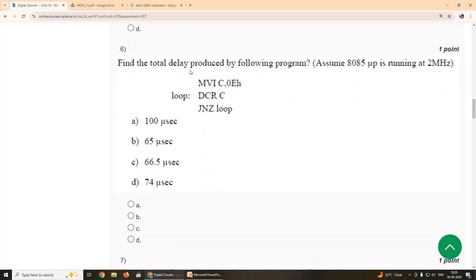Sixth question: Find the total delay produced by the following program. Assume 8085 microprocessor is running at 2 MHz. So the answer, according to us, the suggestion is option A, 100 microseconds.